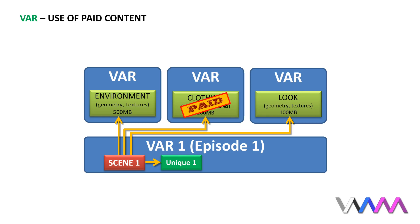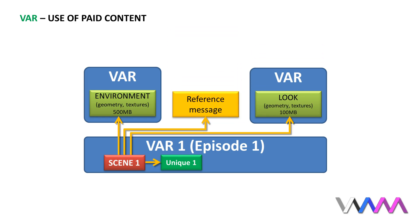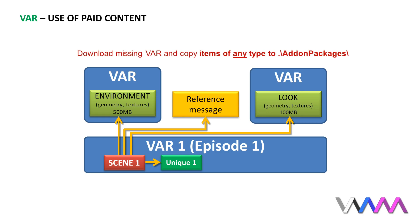VAM will not include any content added to the scene from a VAR file into our own package. If the user opens our scene and does not have that clothing in his addon folder, he will get a message about the missing item. But if we have done our job correctly and wrote proper credits with a link to the post of that clothing, the user can easily find and download the dress and simply drop the VAR file into his addon packages folder. Our scene package file will also include all relevant reference information, including the promotional links which should be included in the dress package.